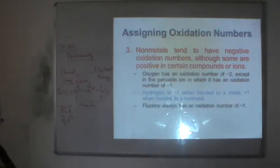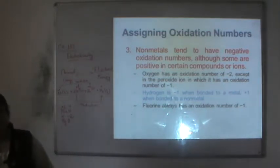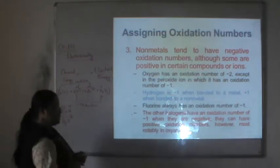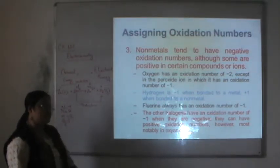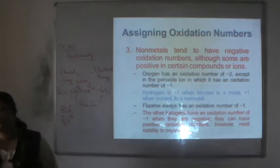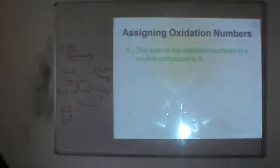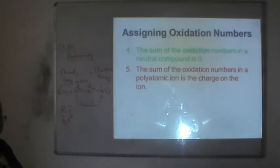Fluorine is the most electronegative element and always has an oxidation number of minus one. The other halogens also have an oxidation number of minus one when negatively charged, but can have positive oxidation numbers in oxyanions. The sum of oxidation numbers in a neutral compound is zero, and in a polyatomic ion equals the charge of the ion.